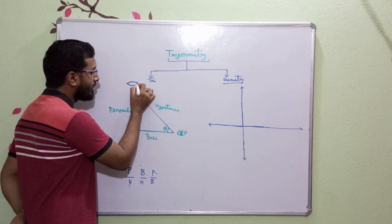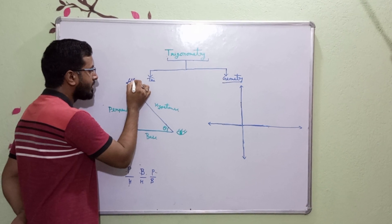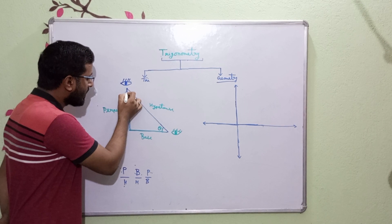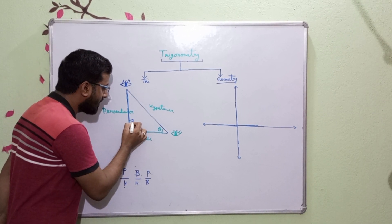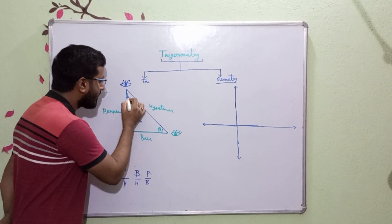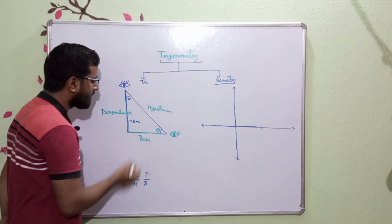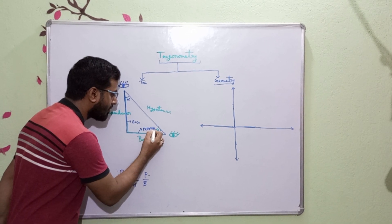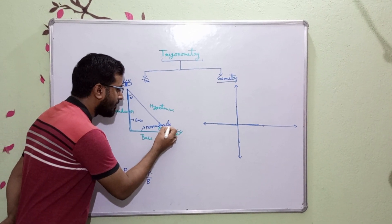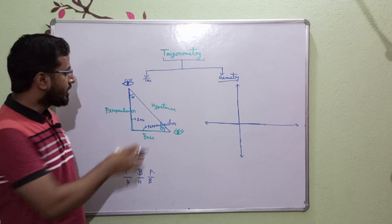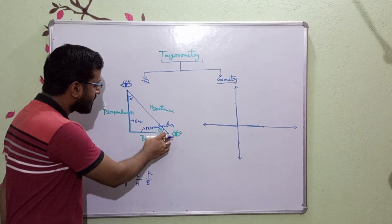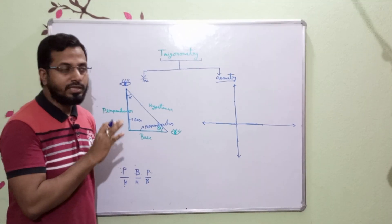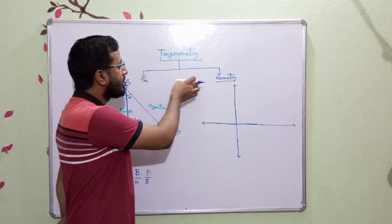But when a person sees from this other side — suppose seeing from this side — the angle is alpha, then this is the base and this is the perpendicular for that case. So the main thing is that the three sides and the angle together constitute the concept of trigonometry.